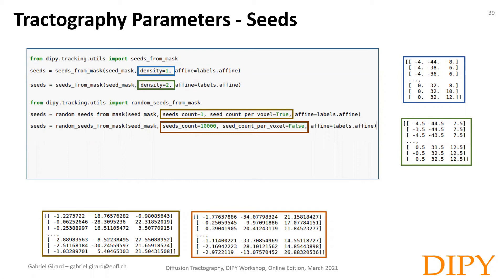For whole brain connectivity analysis, it is recommended to use 1 to 10 million streamlines or even more. For large bundle estimation, such as the CST or corpus callosum, fewer seeds might be enough. For narrow white matter structures, such as the fornix or the uncinate fasciculus, targeted region of interest seeding might be more effective to estimate the bundle trajectory.